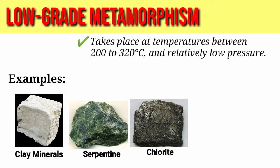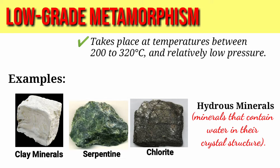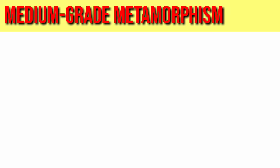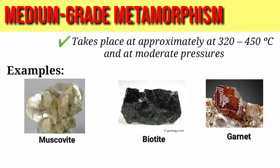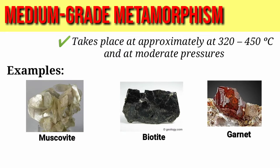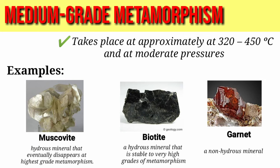Examples of low-grade metamorphism are clay minerals, serpentine, and chlorite. These are characterized by an abundance of hydrous minerals. Medium-grade metamorphism takes place at approximately 320 to 450 degrees Celsius and at moderate pressures. Examples include muscovite, biotite, and garnet.